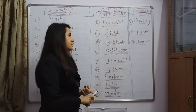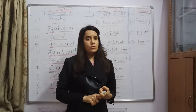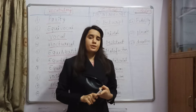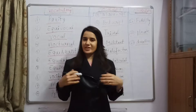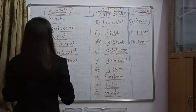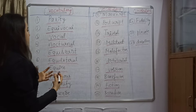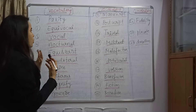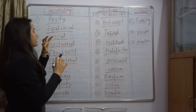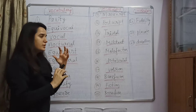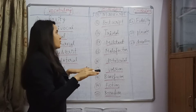First and foremost, you have to learn the root word. Then only you will be able to find out the meaning of the particular word, and the synonyms and antonyms also. So let's get started. First is parity. If something is at equality, if there is talk about equality, we will say the things are in parity. There is nothing above or below — it is at par, meaning it is equal.